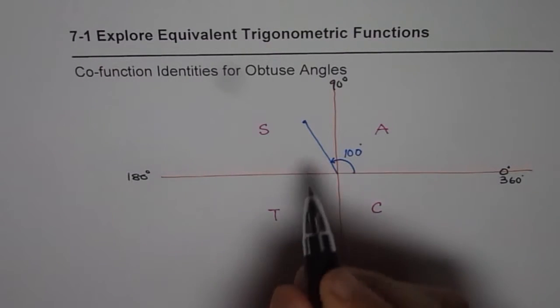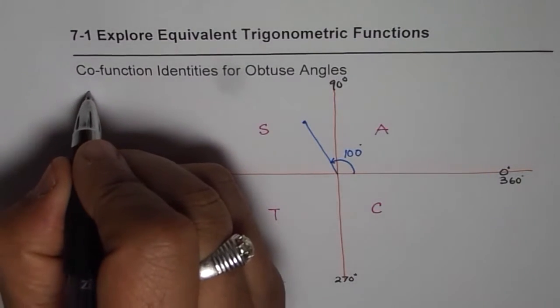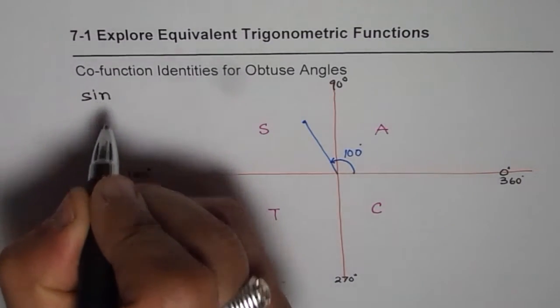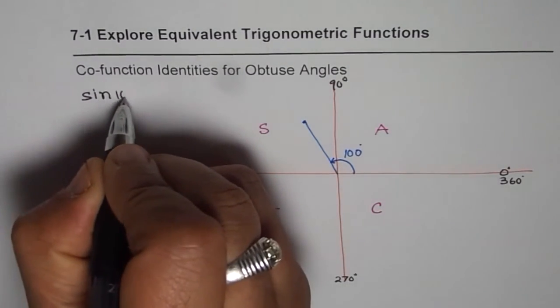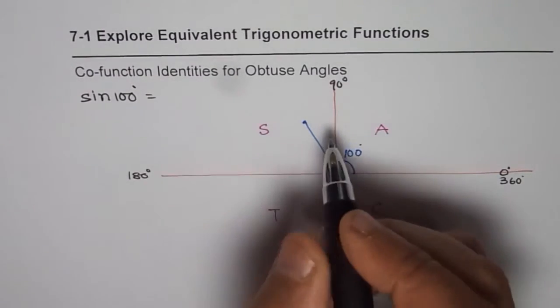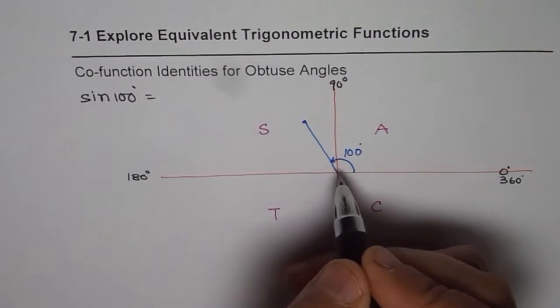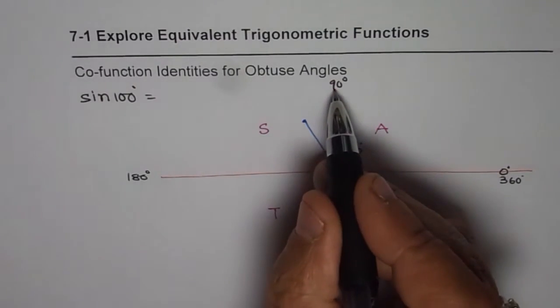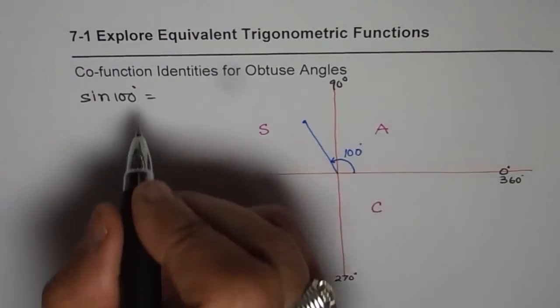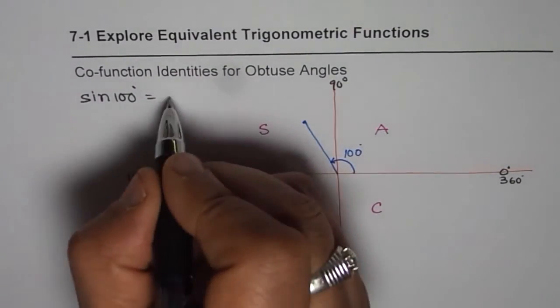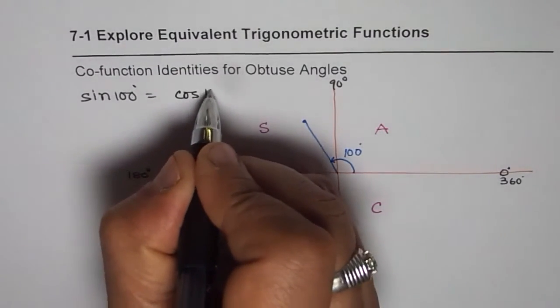That helps, right? Now, if I have to write, what is the co-function identity for sine of 100 degrees? You will say, well, we have to look for this angle, acute angle, which is 100 minus 90. Simple, 10 degrees. Now, since sine is positive, it will be plus cos 10 degrees.